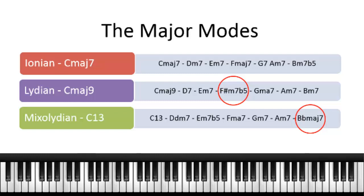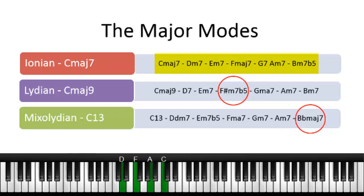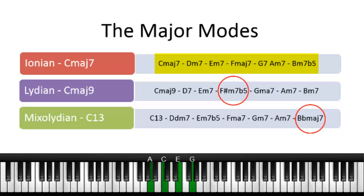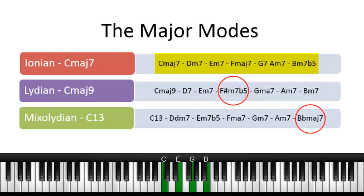Let's take a look at the chords produced by the modes. We're going to use the diatonic chords to the seventh note. So we have C major on the one, D minor seven on the two, E minor seven on the three, F major seven on the four, G dominant seven on the five, A minor seven on the six, B minor seven flat five on the seven, and then back to the root chord.